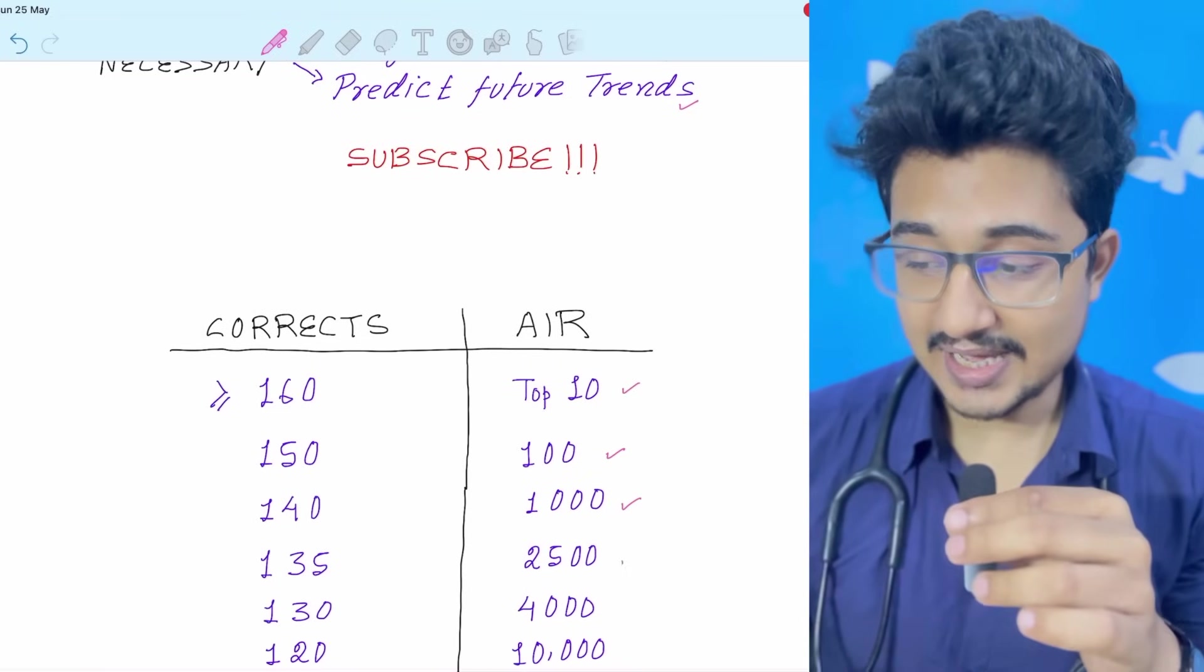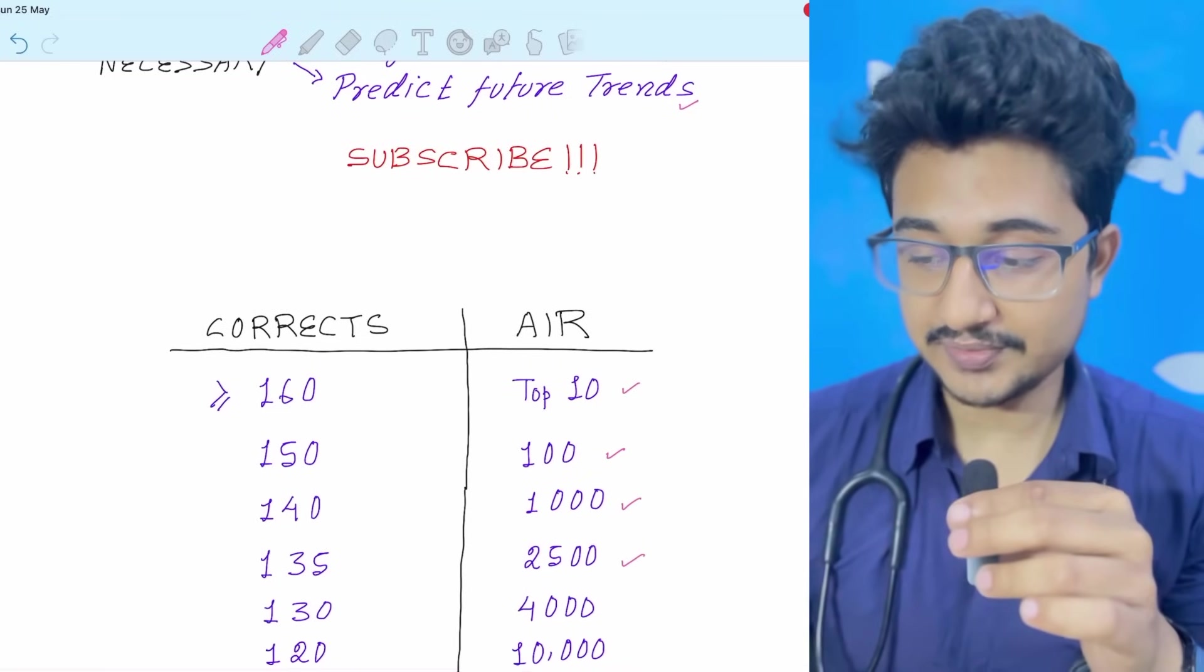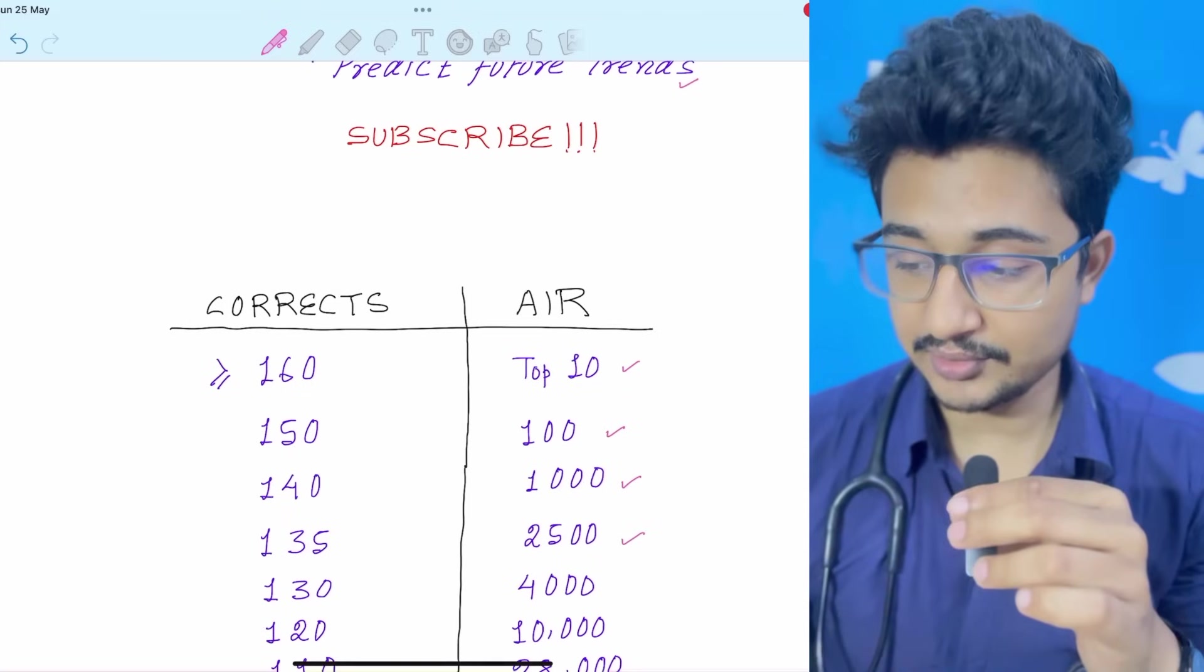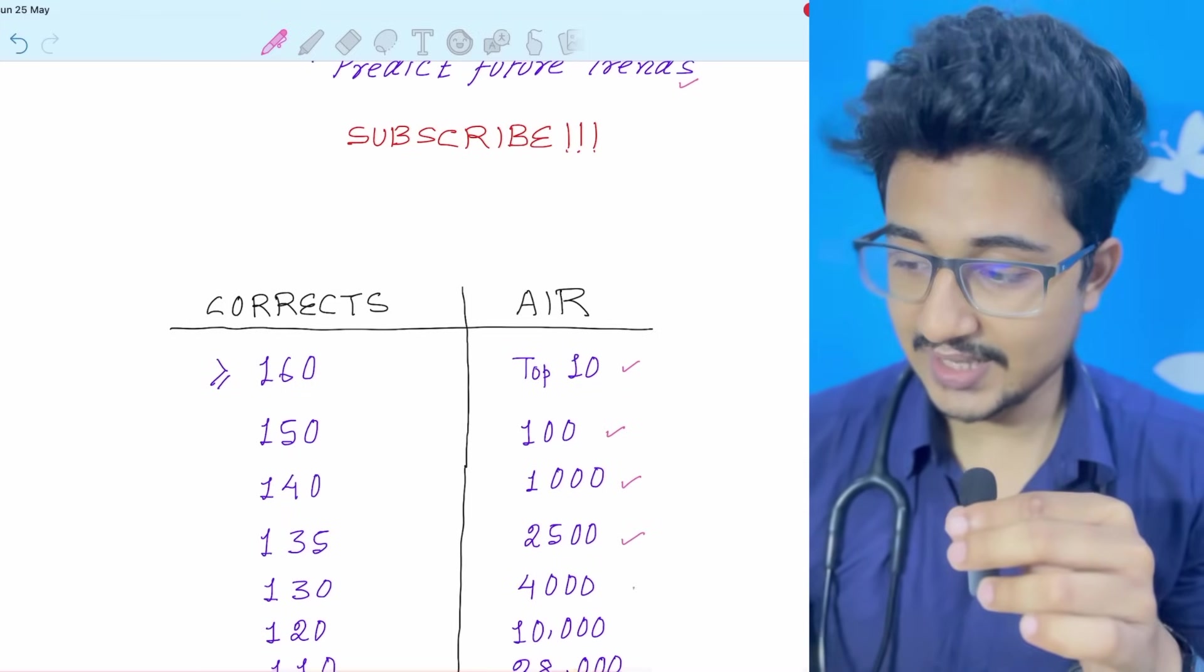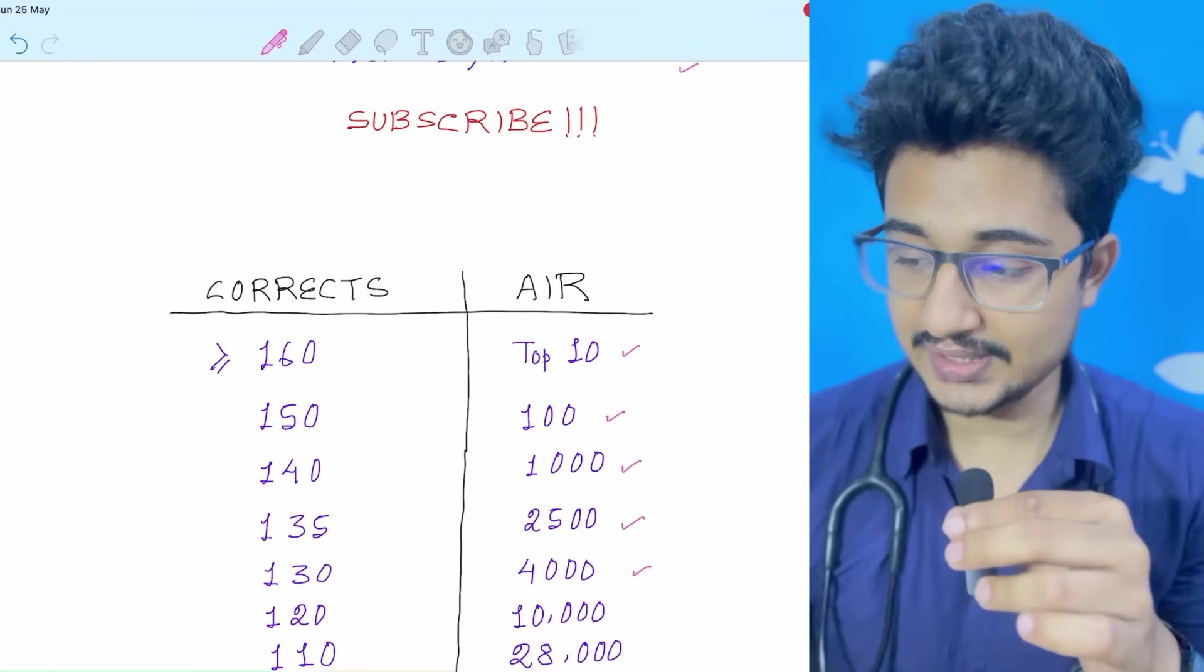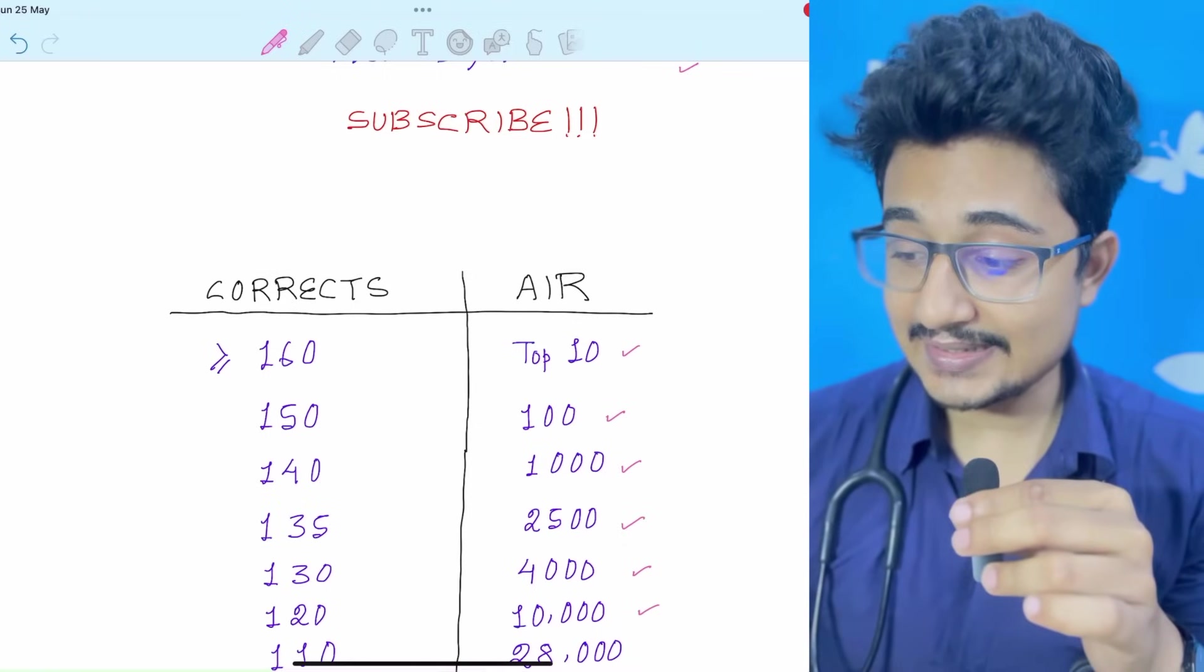More than 135, as I predicted more than 2500, it is 2500 only. 130 also I had predicted approximately 4000 and it is 4000 only. In 120 it is 10,000.